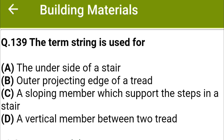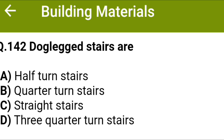The term 'string' is used for: option A the underside of the stair, option B outer projecting edge of the tread, option C a sloping member which supports the steps in a stair, option D a vertical member between two treads. The correct answer is option C, a sloping member which supports the steps in the stair.